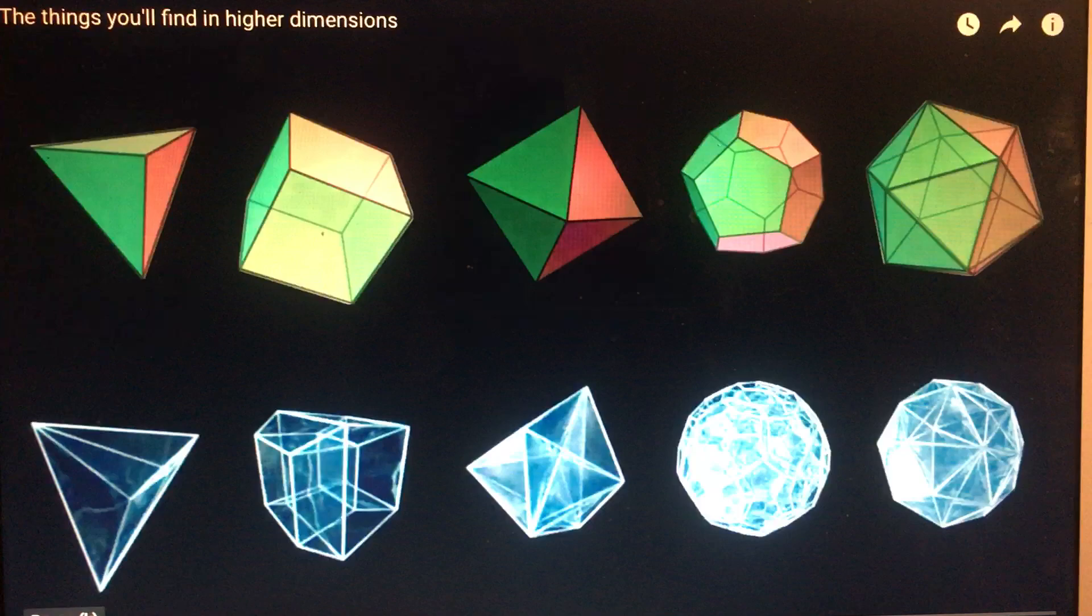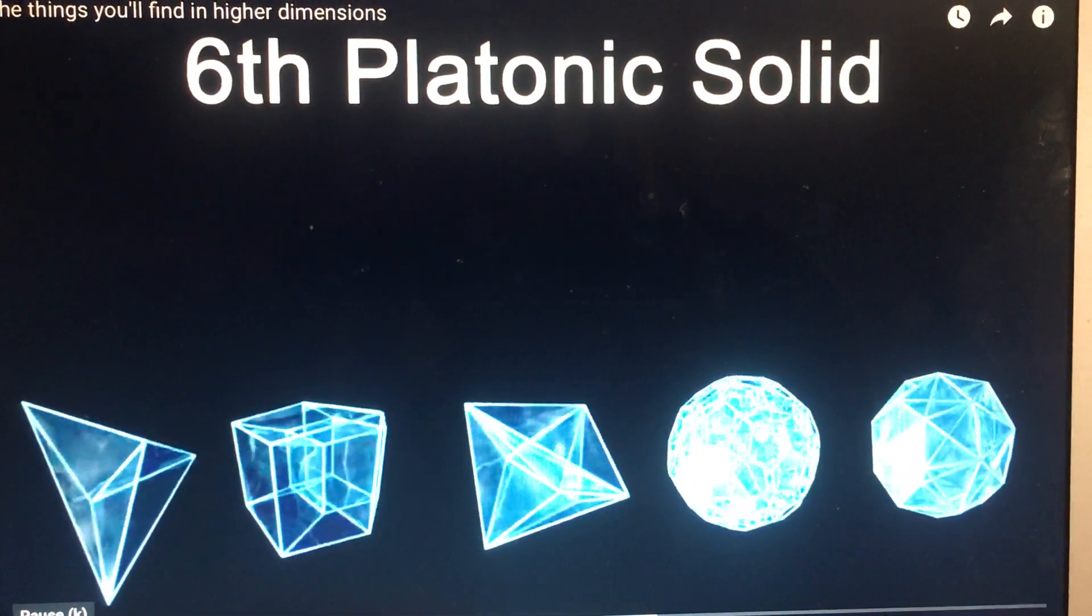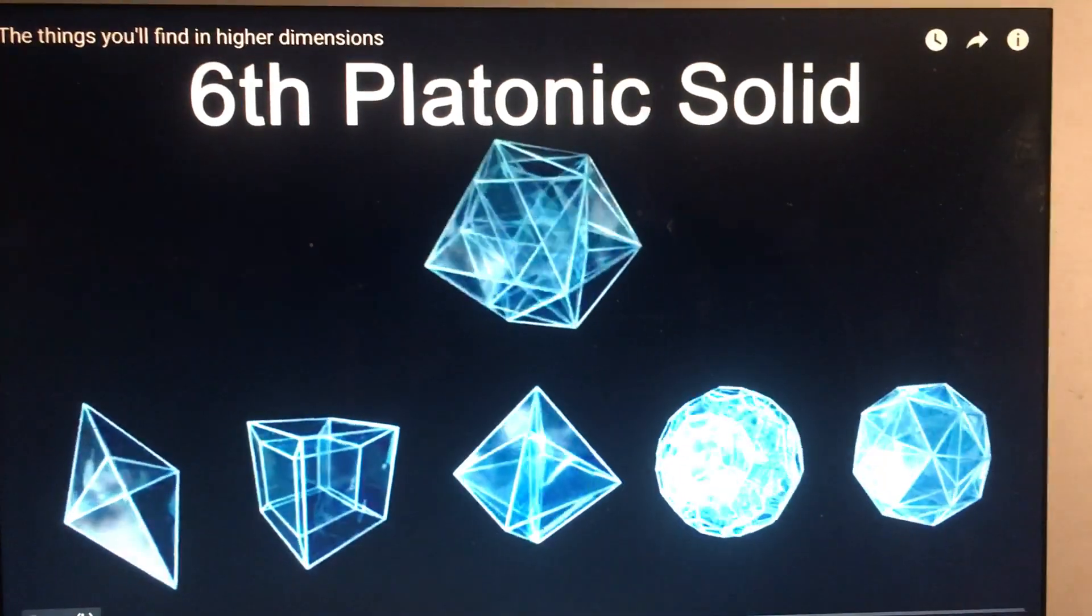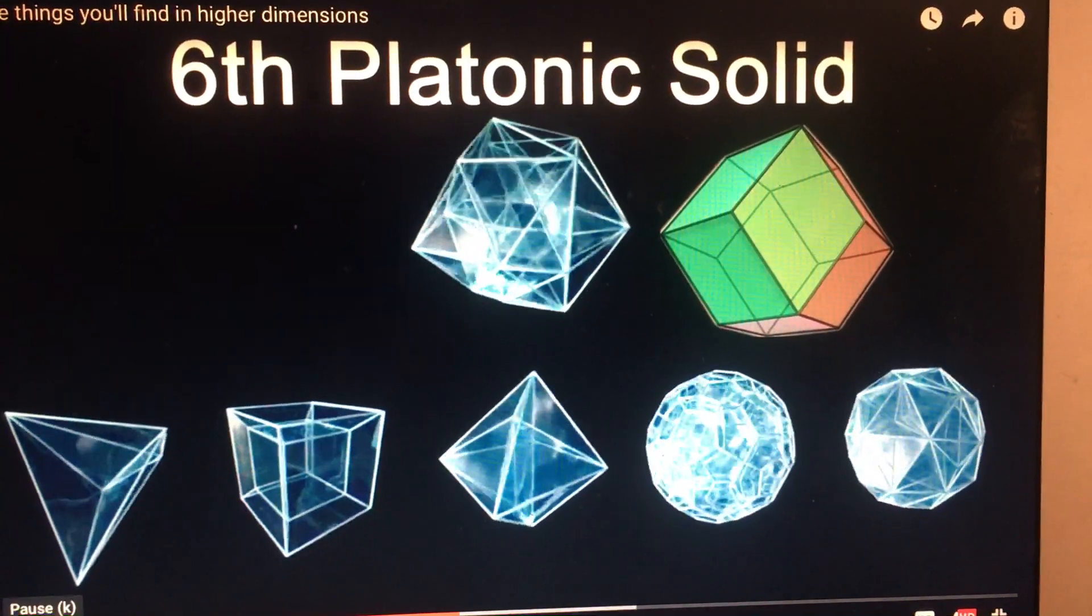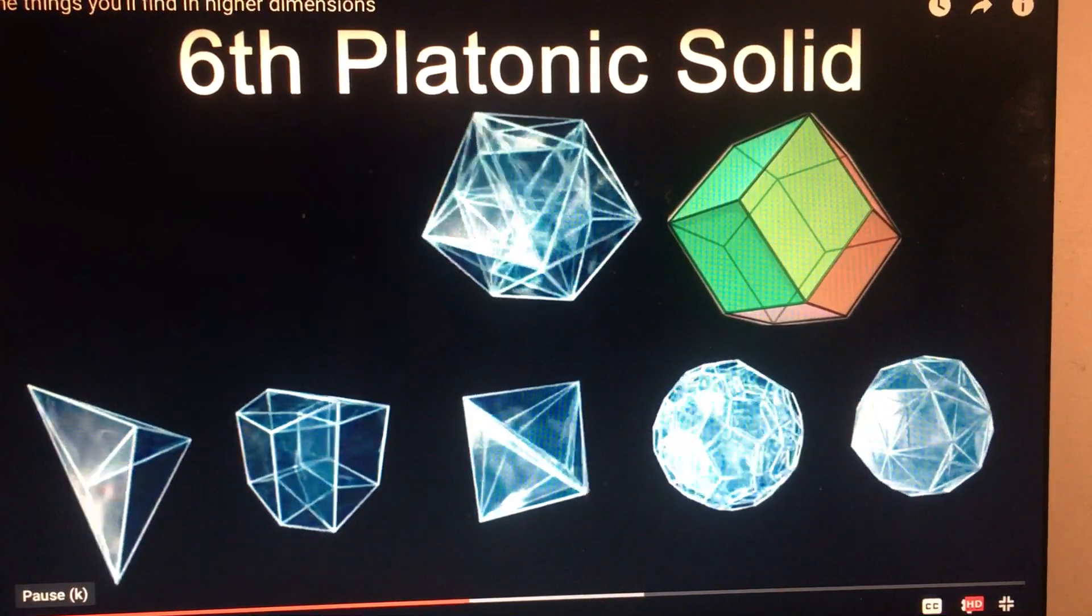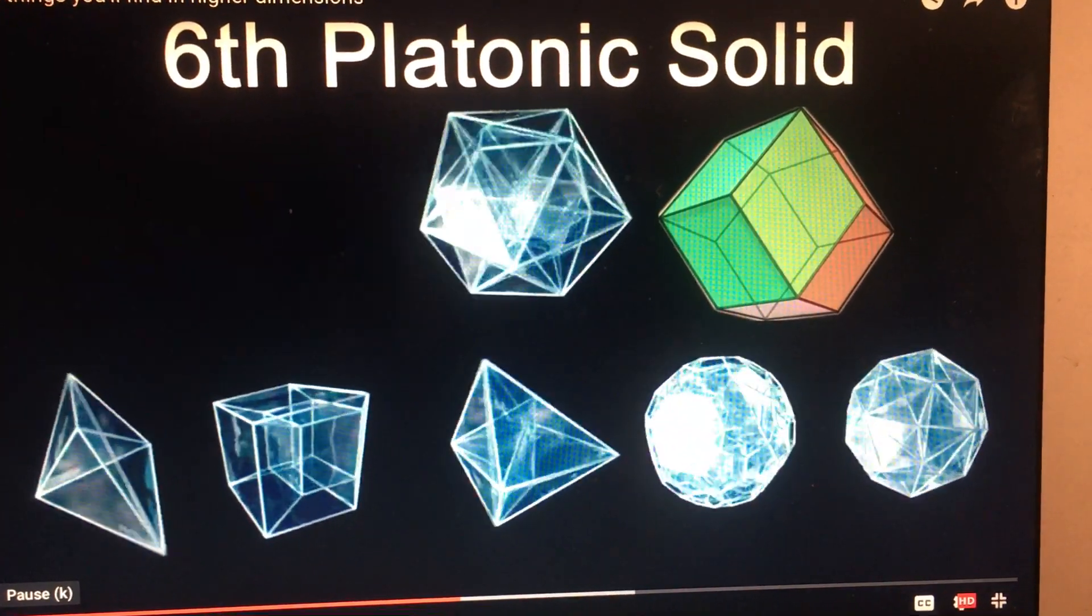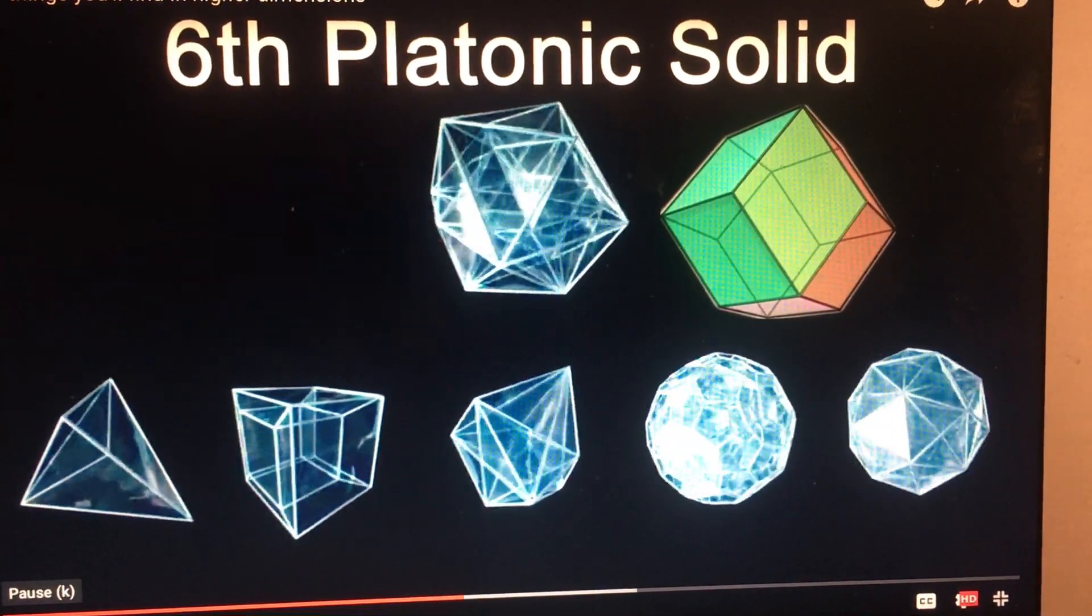But there is a sixth Platonic solid that emerges in the fourth dimension, and it's the octa-cube, or hyper-diamond. The analog of this constructed in three dimensions is the rhombic dodecahedron, something which is not a Platonic solid due to the irregular faces. But in four dimensions, amazingly, the necessary criteria are all met.